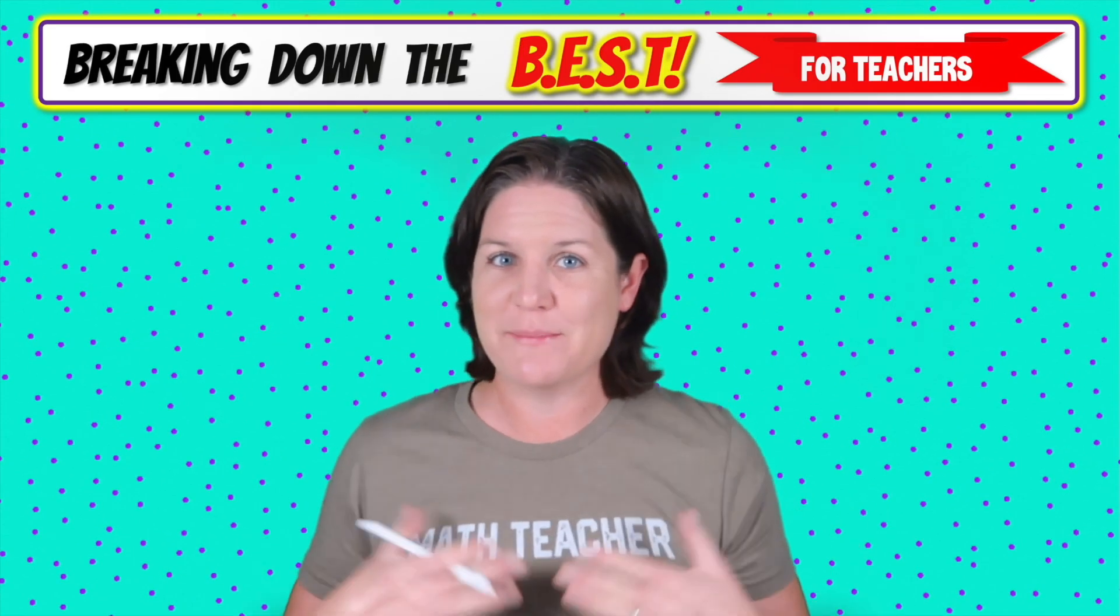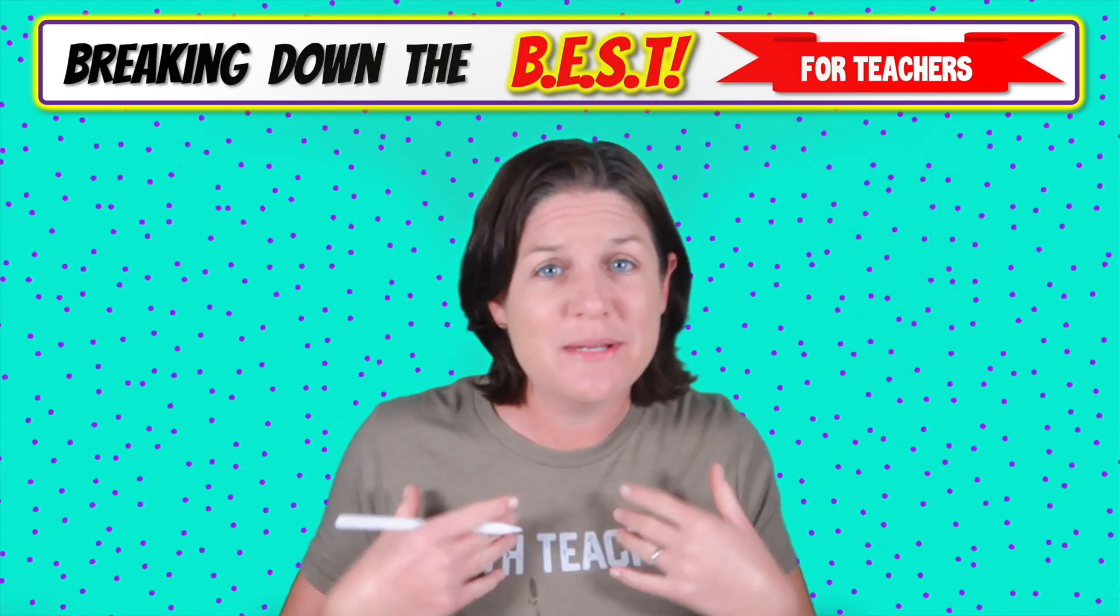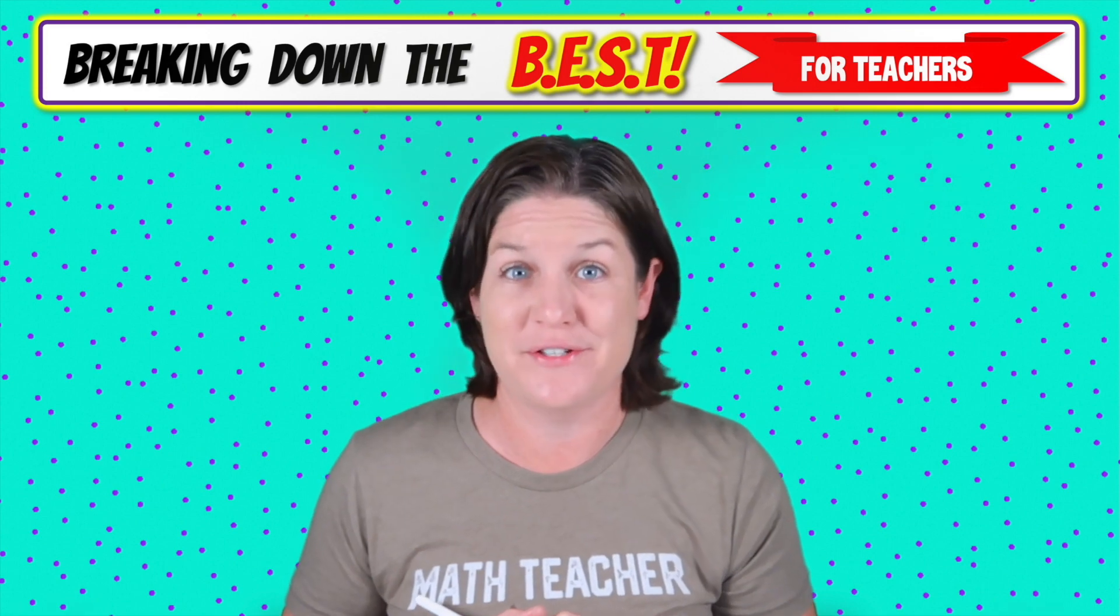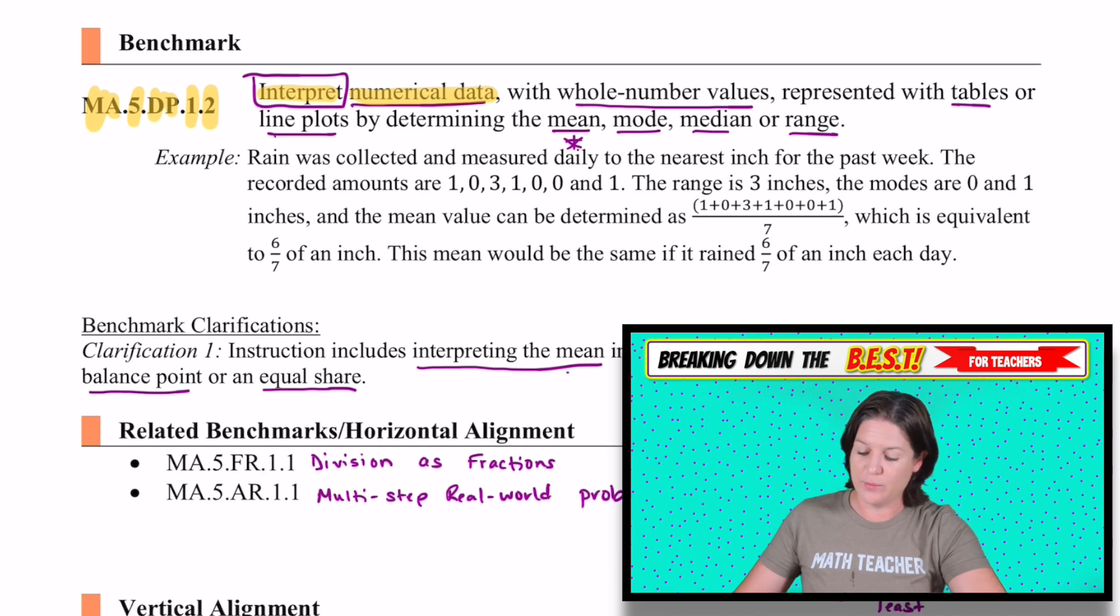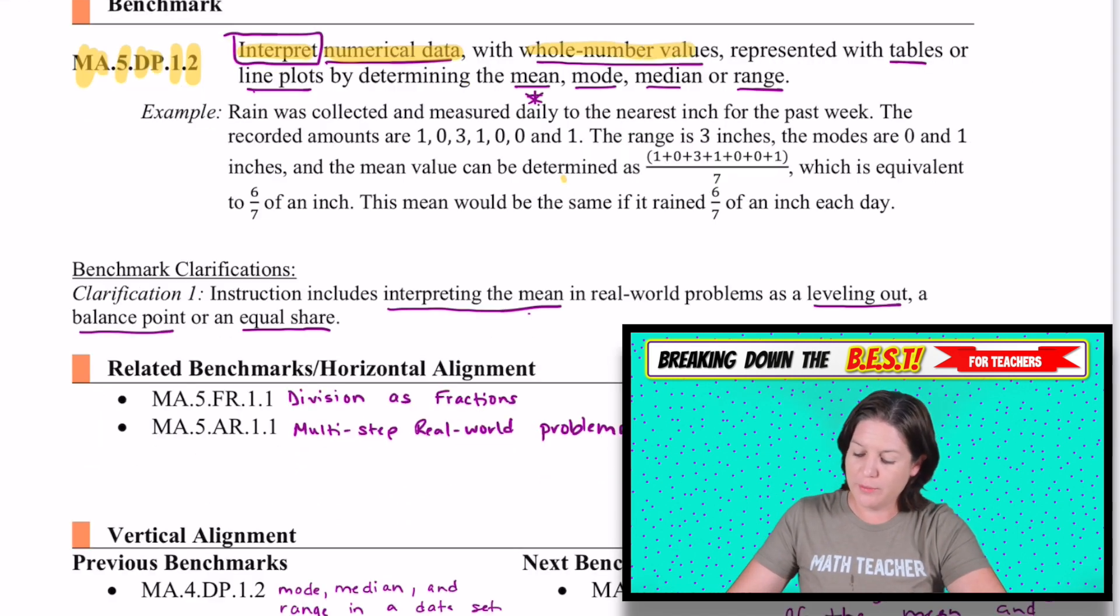Hey, hey everyone. My name is Sarah McCarthy and I am so excited that you are joining me as we break down the following standard. Today's standard is ma.5.dp.1.2 and it says to interpret numerical data. That means data with numbers with whole number values. I was kind of surprised to see this because in fifth grade we do a lot of work with fractions and decimals, but then I was like, oh, we're going to determine the mean. That makes sense that it's whole number.